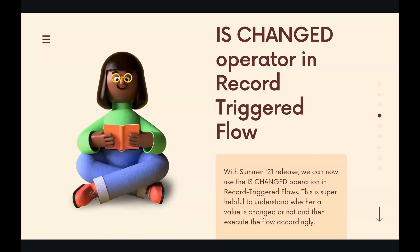The third feature we'll be talking about is the 'Is Changed' operator. This is an operator that Salesforce developers are familiar with, but it was not previously available in Flow. Because of that, we needed to write extra logic to check whether a particular field value actually changed. Now with the Summer 21 release, the 'Is Changed' operator is available in record-triggered flows, and this is going to help us make our flows a lot simpler.